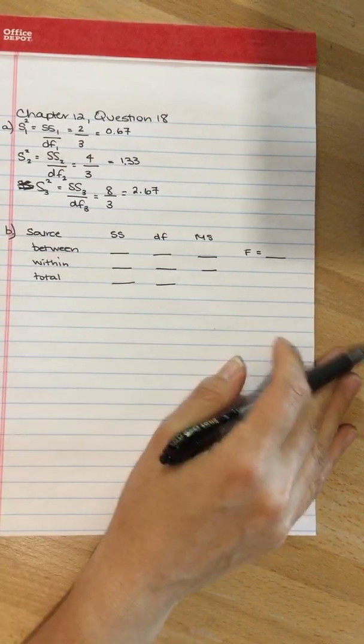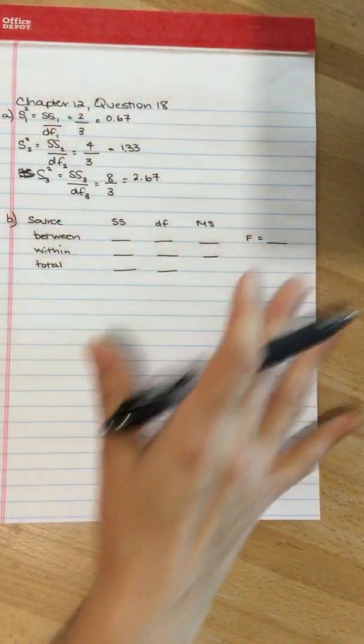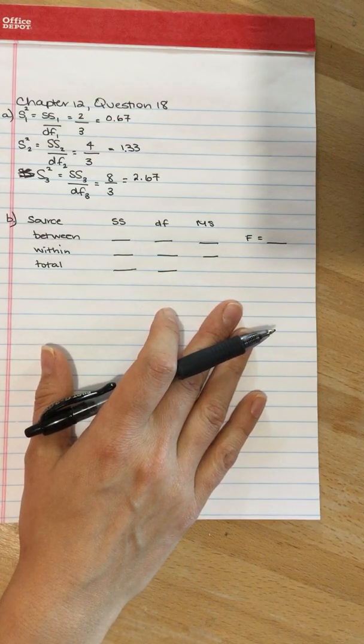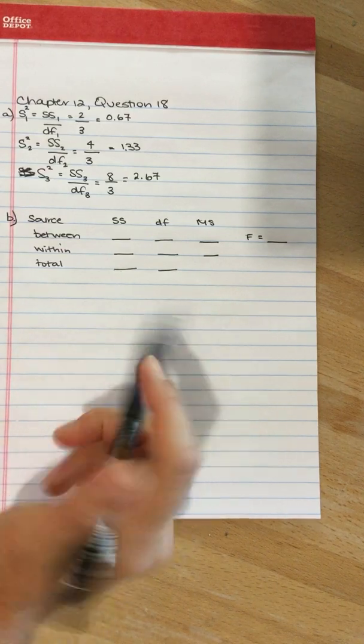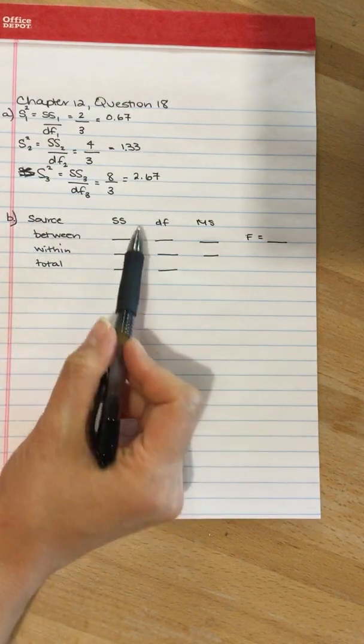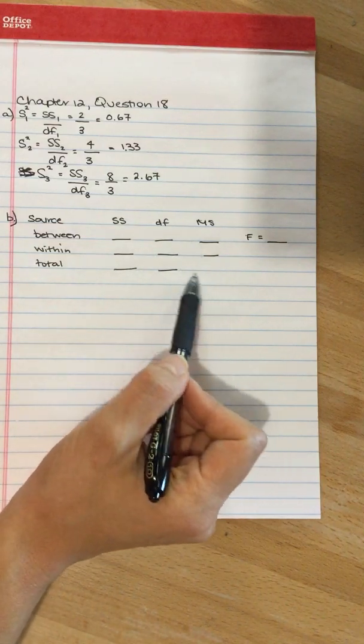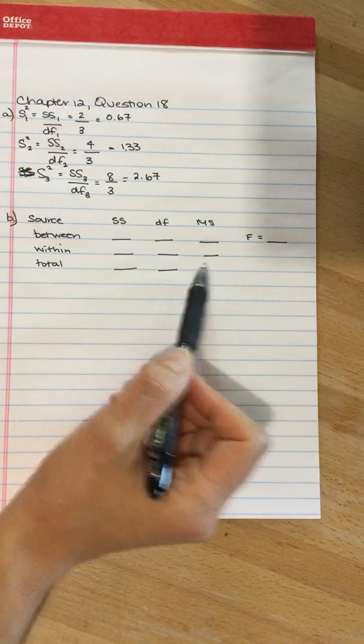I've set up an ANOVA summary table. The question doesn't explicitly ask for one, but this organizes the information quite nicely, and I highly recommend that you create one. We've got the different sources here, columns for sum of squares, degrees of freedom, and mean square. We could technically calculate that mean square total, but we wouldn't use it for anything, so don't waste your time calculating it.